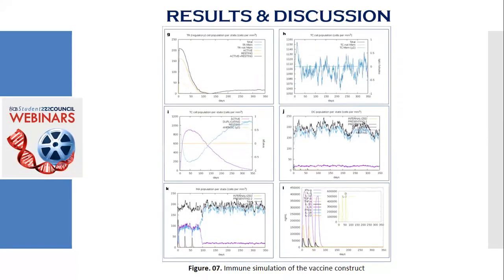And here graph G illustrates the elevation in the regulatory T lymphocyte over the course of the three injections. Graph H shows the increment of the cytotoxic T lymphocyte population over the course. Graph I displays the increase in the active cytotoxic T lymphocyte population per state over the course.